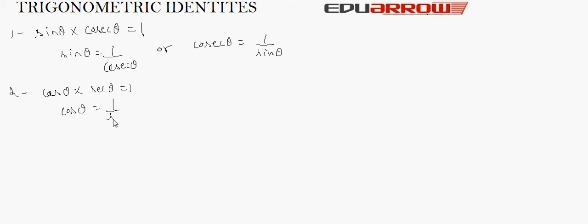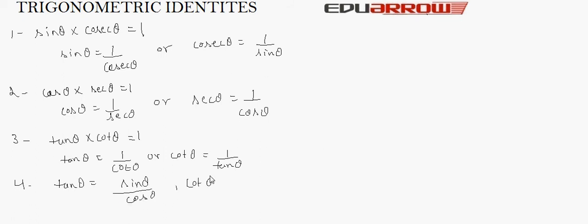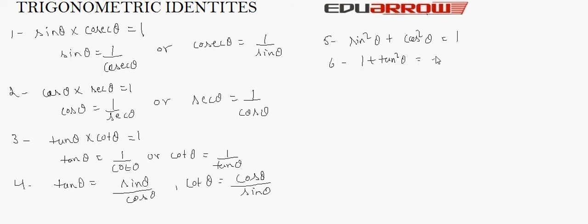The next identity is: cos theta multiplied by sec theta is equal to 1, so cos theta equals 1 upon sec theta. The next is: tan theta multiplied by cot theta is equal to 1, so tan theta equals 1 upon cot theta, or cot theta equals 1 upon tan theta. Also, tan theta equals sin theta over cos theta, and cot theta equals cos theta over sin theta. The next important identity is: sin squared theta plus cos squared theta is equal to 1.